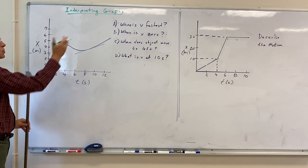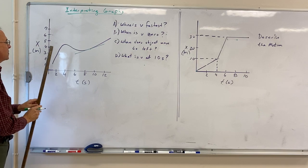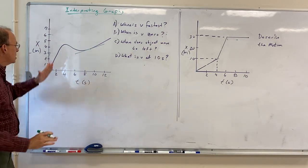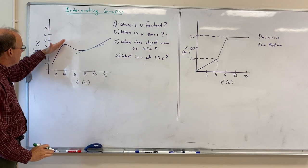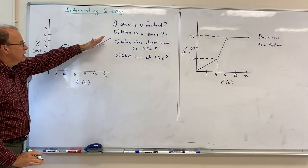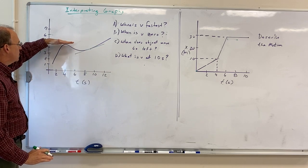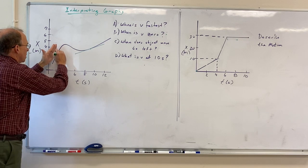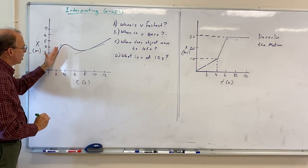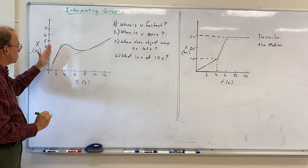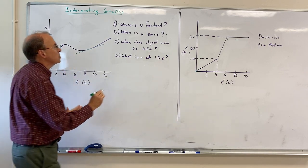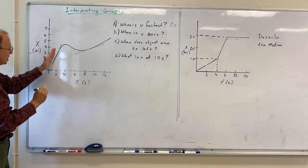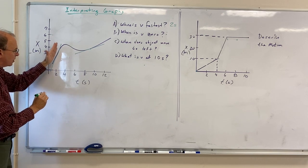I've asked the question: when is V fastest? So I have to ask when is the slope steepest. I'm letting my hand be the slope. Here the slope is zero, and here I've got the steepest slope. So somewhere around here the slope is steepest — that's where V would be fastest, so around two seconds. The slope would be steepest right around that region.